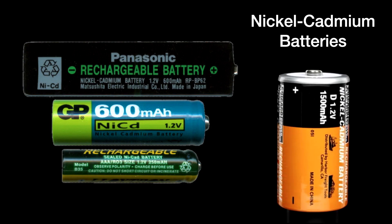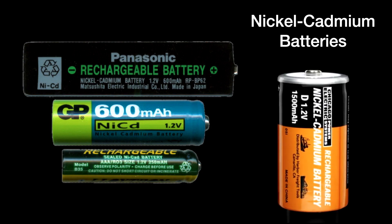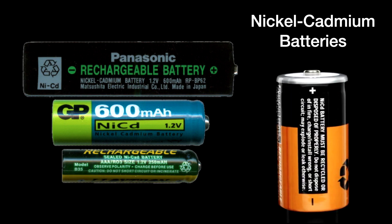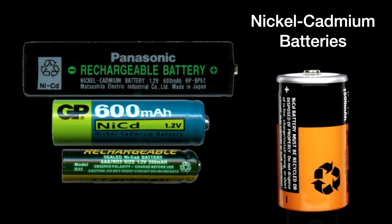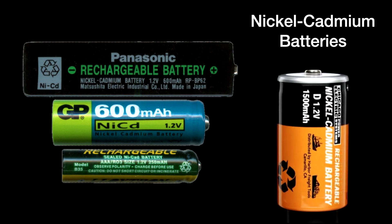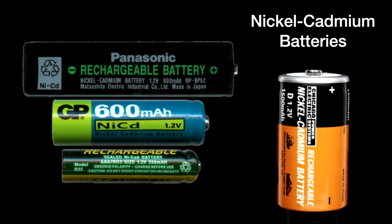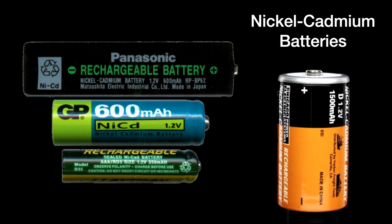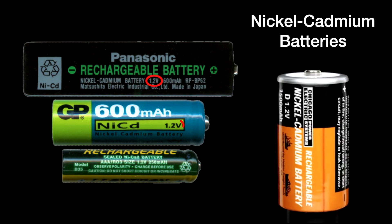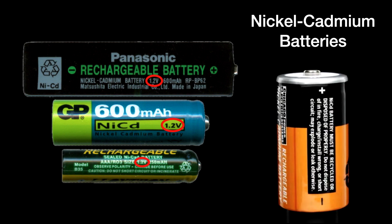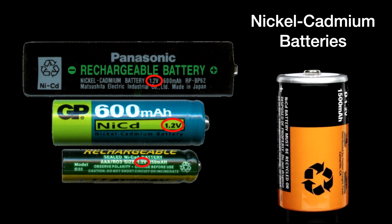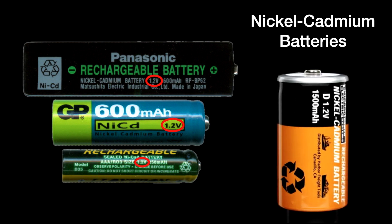The biggest use of cadmium is — or was — in the making of rechargeable batteries. Here we see a variety of nickel-cadmium batteries. The disadvantage of these is that they had a limited number of charge-discharge cycles before they would no longer hold a charge, and the toxic nature of cadmium meant we had to be very careful to recycle them properly. They also had a fully charged voltage of only 1.2 volts, making them unsuitable in some voltage-sensitive applications as direct replacements for the more common 1.5-volt carbon-zinc batteries of the same sizes.